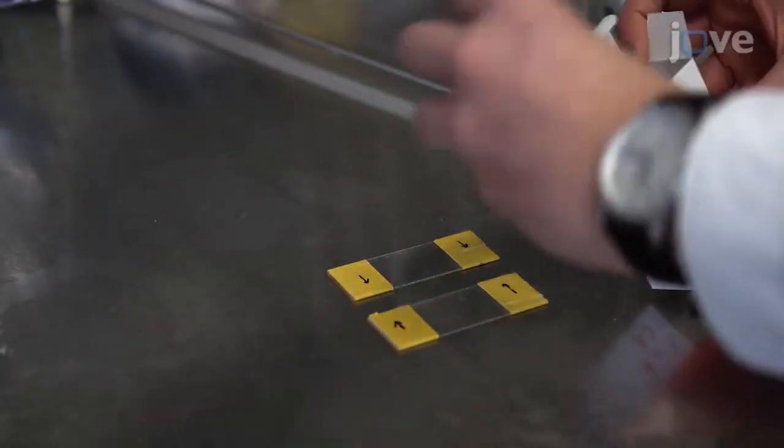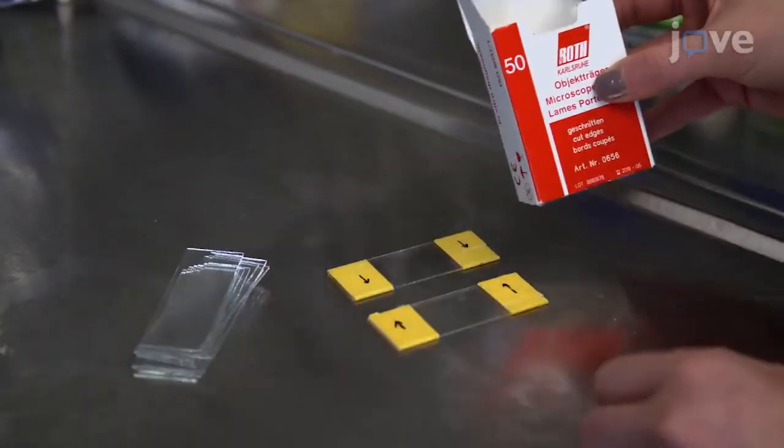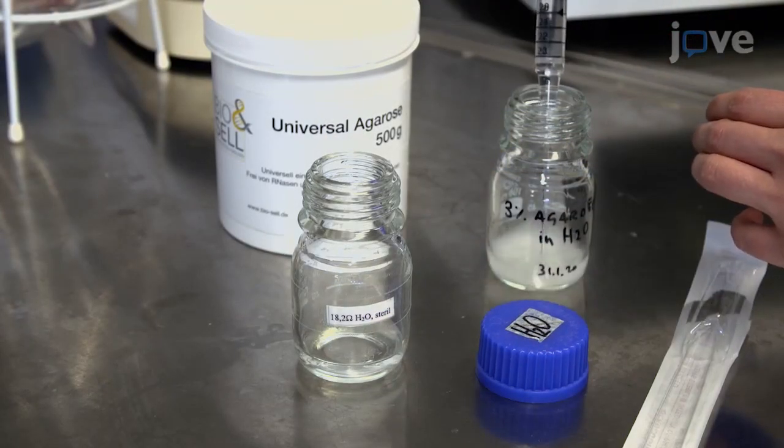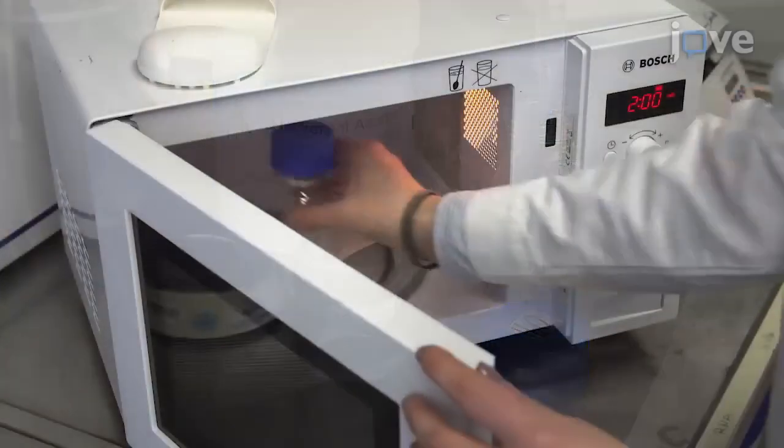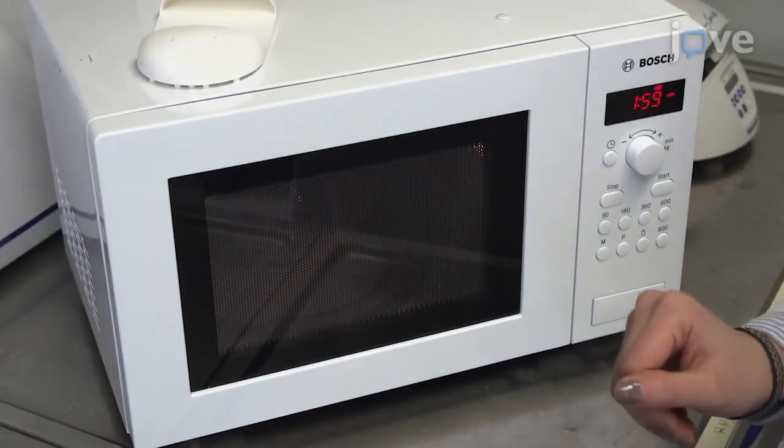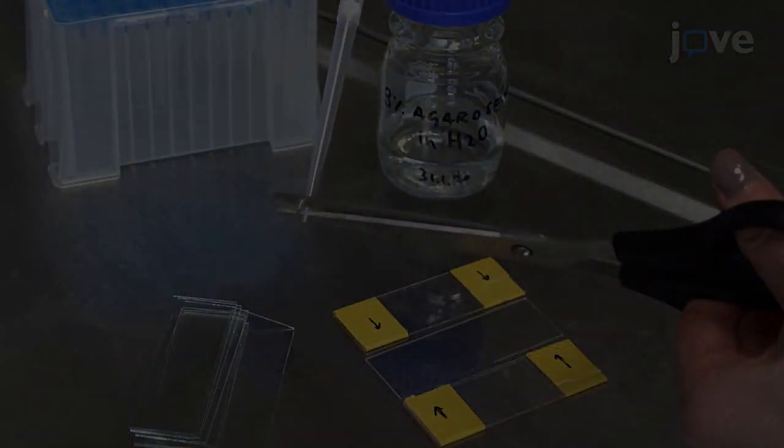On the day of imaging, start by preparing the imaging slides. Place agarose and double-distilled water at a concentration of 3% weight by volume. Transfer it into a microwave to melt, and then let it cool slightly. Cut the tip of a pipette cone.